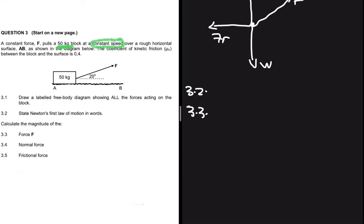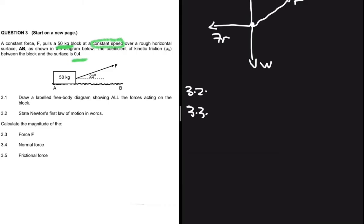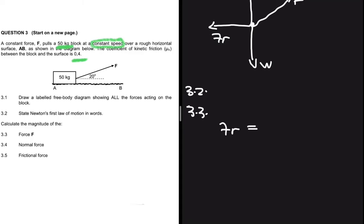The block moves over a rough horizontal surface, so we have frictional force. The coefficient of kinetic friction is 0.4. Since the object moves at constant speed, the forces along the x-axis are balanced and the forces along the y-axis are balanced. This means the frictional force equals the x-component of the applied force.